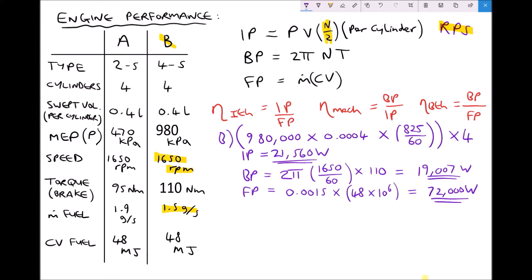Now we can calculate our three efficiencies for the four stroke engine. The indicated thermal efficiency is the indicated power divided by the fuel power: 21,560 divided by 72,000 equals 0.299, or 29.9%. The mechanical efficiency is brake power over indicated power: 19,007 divided by 21,560 equals 88.2%.